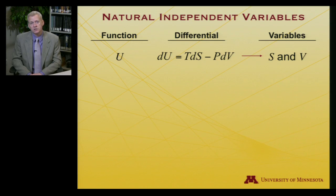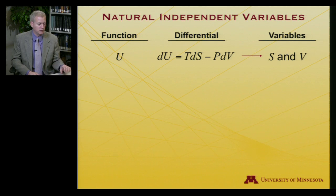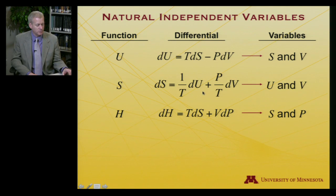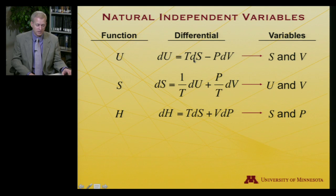Now that I have these expressions, I can discern the natural independent variables. For U, since dU = TdS - PdV, the natural variables are S and V. For entropy, keeping dS on one side and dividing by T gives natural variables U and V. For enthalpy, the natural variables are S and P.